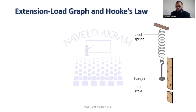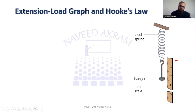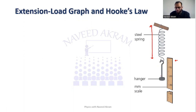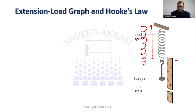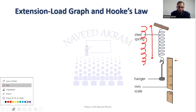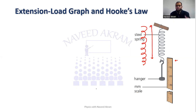Now, consider a spring set up with a half-meter ruler. A hanger is attached to the spring, and we will place different masses on it. This is the original length of the spring. When we apply a load — placing a mass on the hanger — the length will increase. The amount by which the length increases is known as the extension.